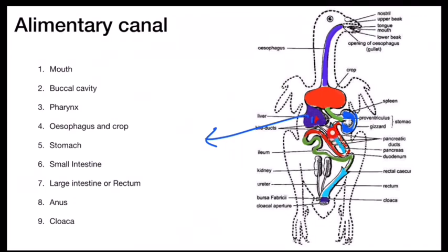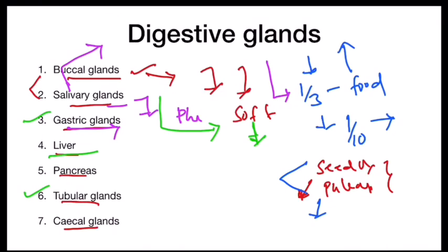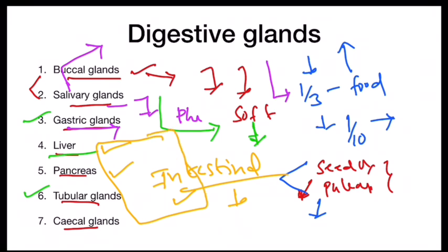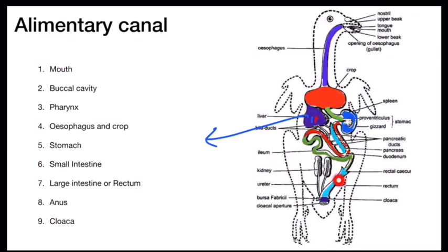The next digestive gland is the pancreas, present inside the U-shaped duodenum. It forms three ducts that all join with the duodenum. Intestinal glands are present in the duodenum and also in the ileum. The juices from the hepatic gland, pancreas, and intestinal glands contain digestive enzymes that digest incompletely digested food coming from the stomach. The cecal glands are present at the junction of the ileum and rectum, secreting digestive juices helpful for digesting fiber of the feces.